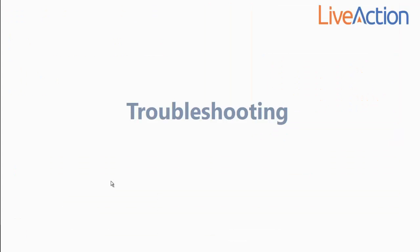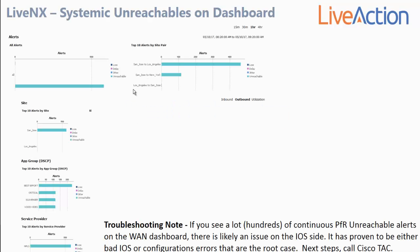When you first set up your PFR or iWAN environment and enable LiveNX, if you see lots of unreachable alerts, this is most likely caused by one of two things: bad IOS — you may want to upgrade your IOS version per Cisco's recommendation — or a PFR configuration issue, which often seems to relate to the prefix list that controls PFR interesting traffic. Either way, if you see lots of unreachable events, we recommend reaching out to Cisco TAC for next-step troubleshooting.